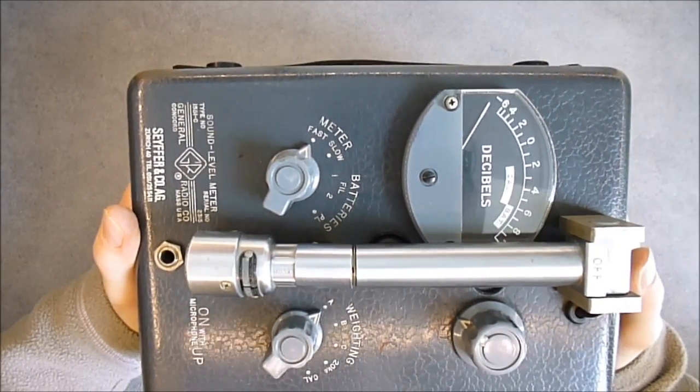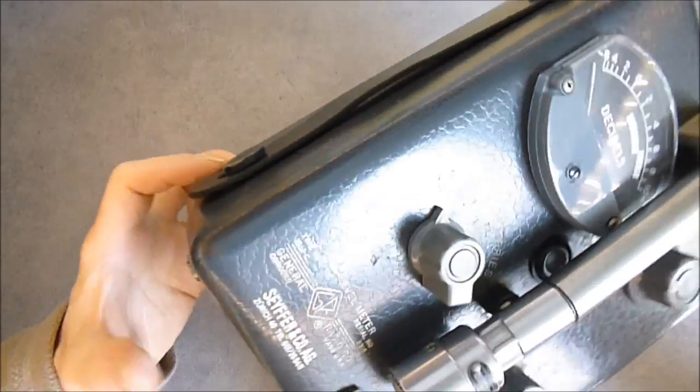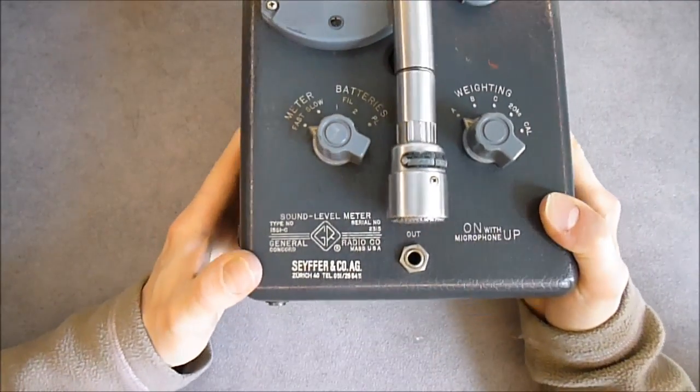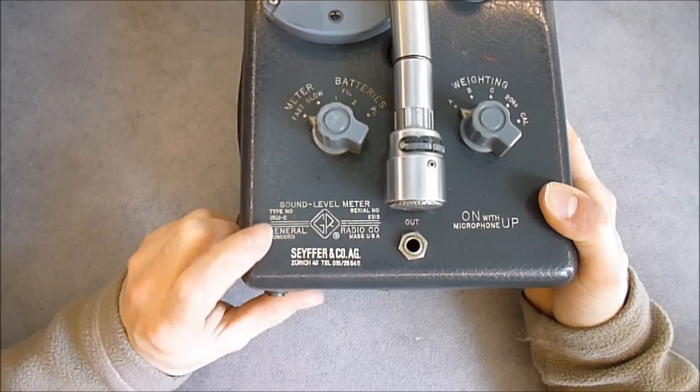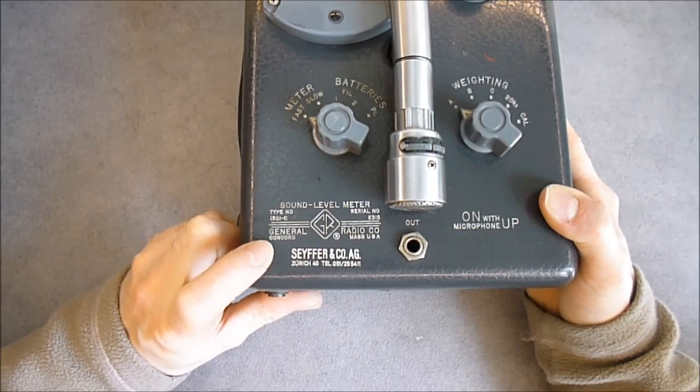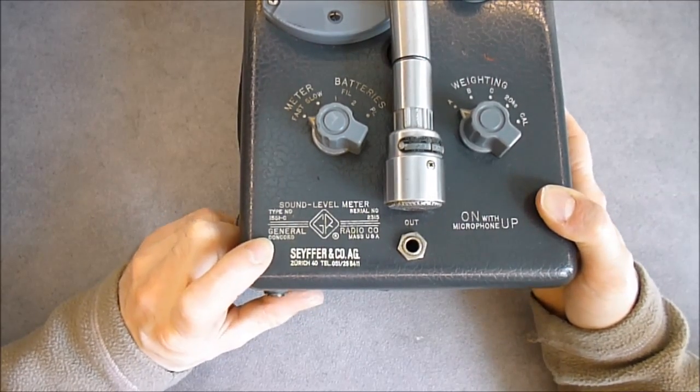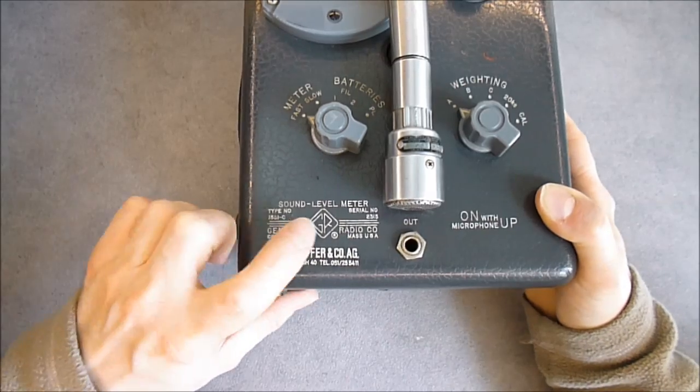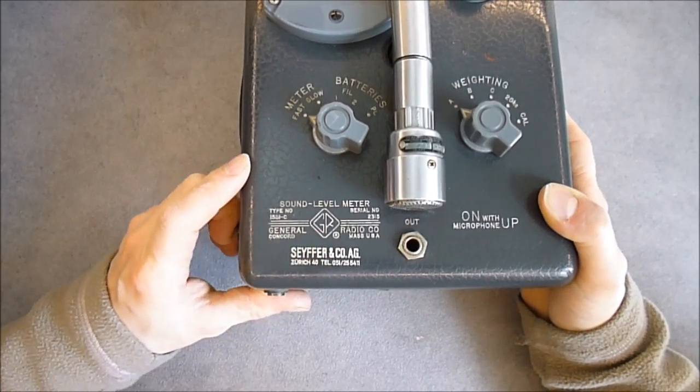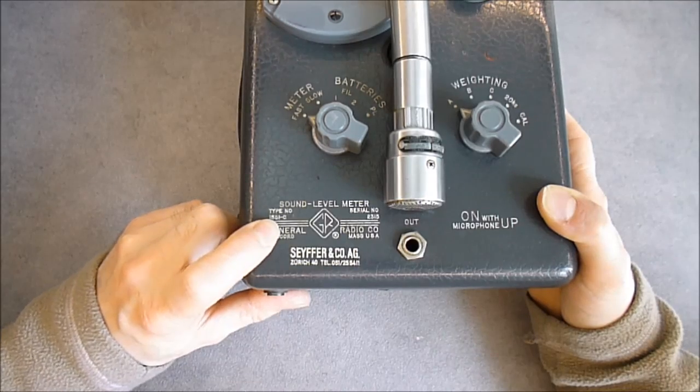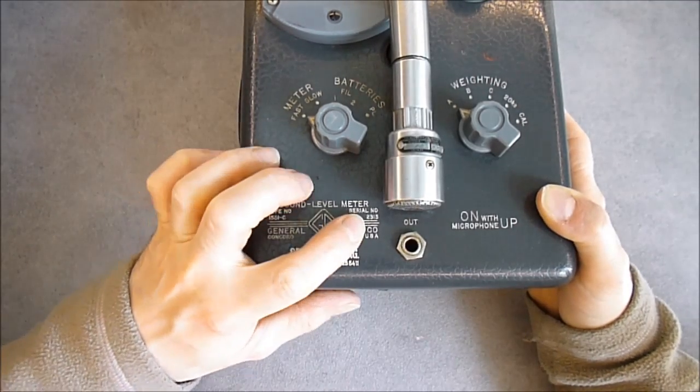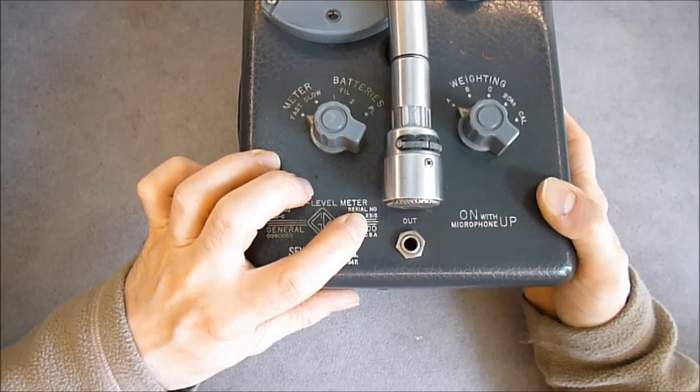For 10 euros I got this vintage 1961 sound level meter made by General Radio Corporation in Concord, Massachusetts, USA. It is a type number 1551-C, serial number 2315.